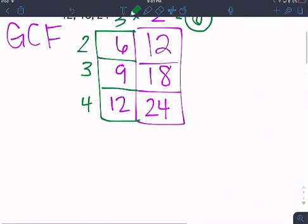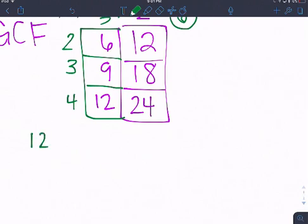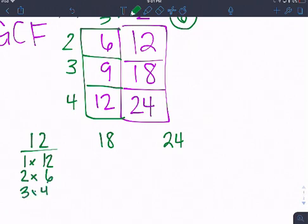Another way that you could do this is by just listing out factors of 12, 18, and 24. So factors of 12 would be 1 times 12. I'm listing out factor pairs. 2 times 6, and 3 times 4. These are all factors of 12. And that is it. 18, we have 1 times 18, 2 times 9.